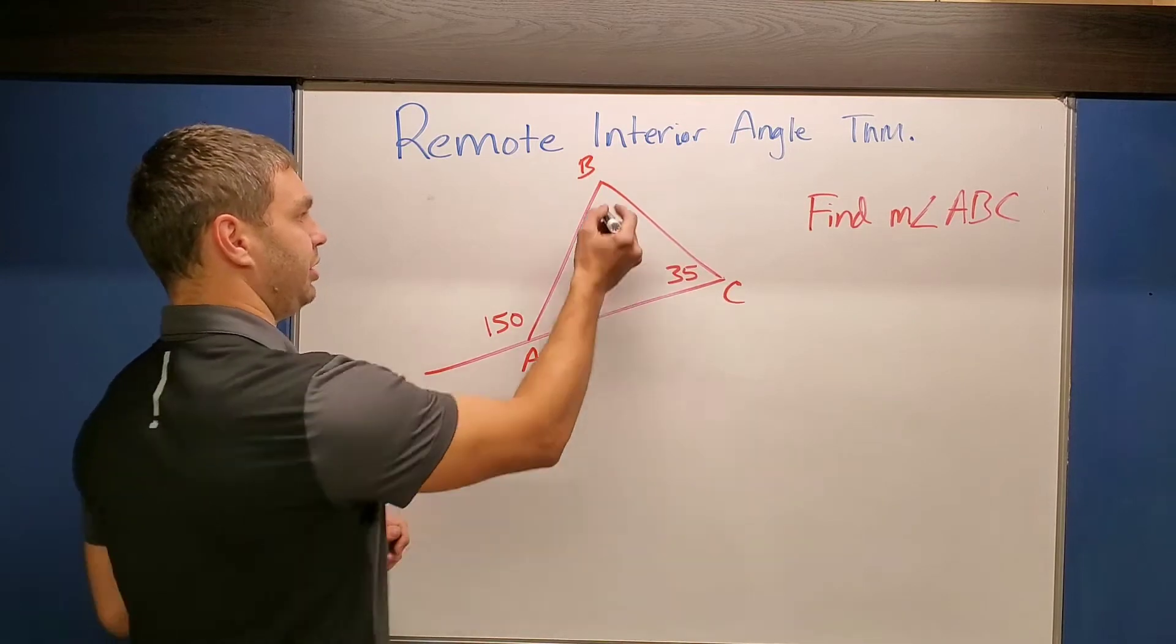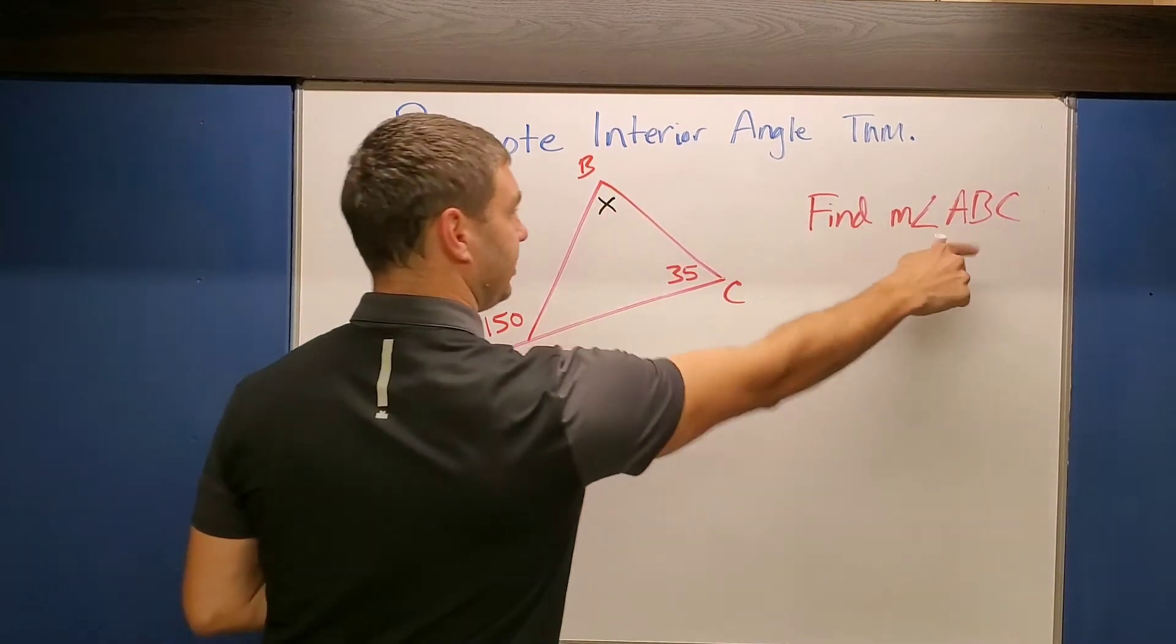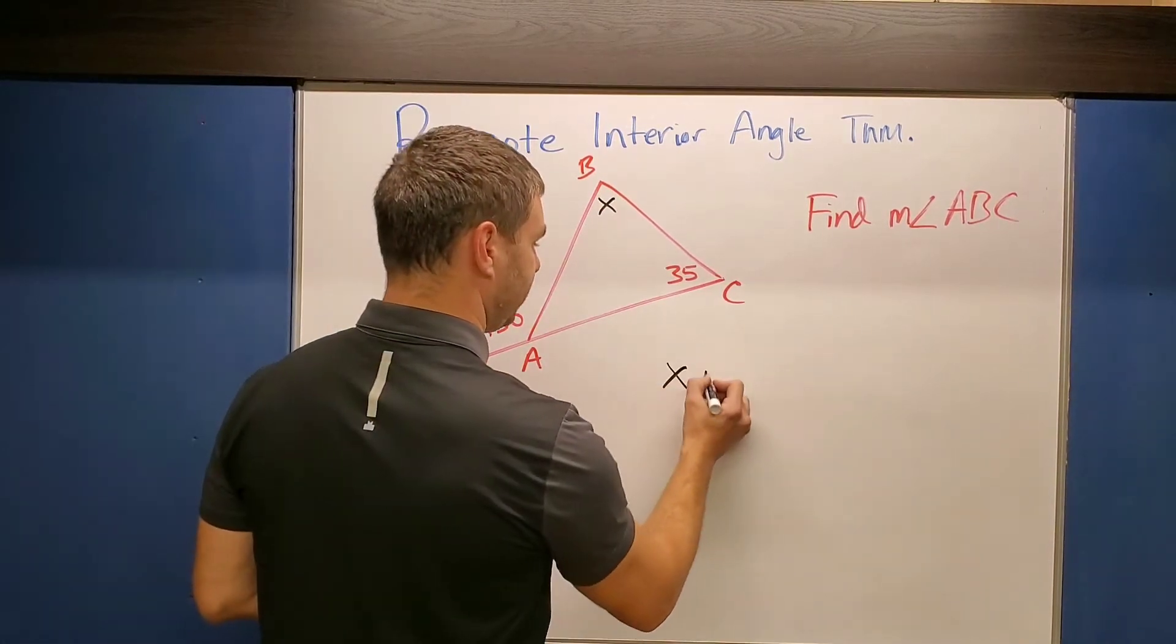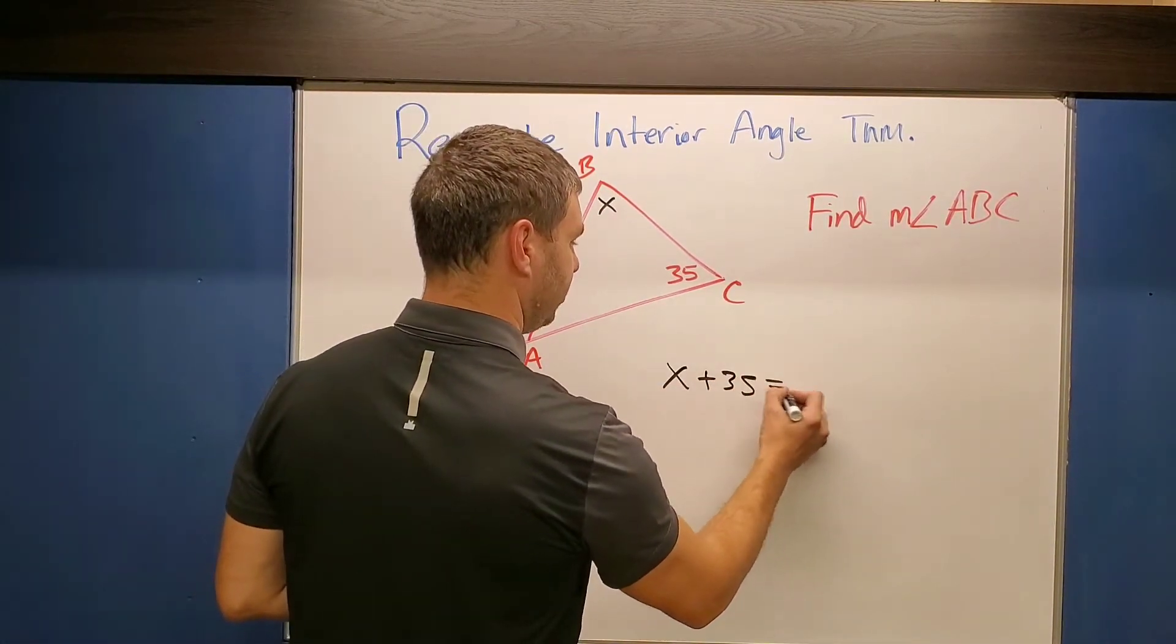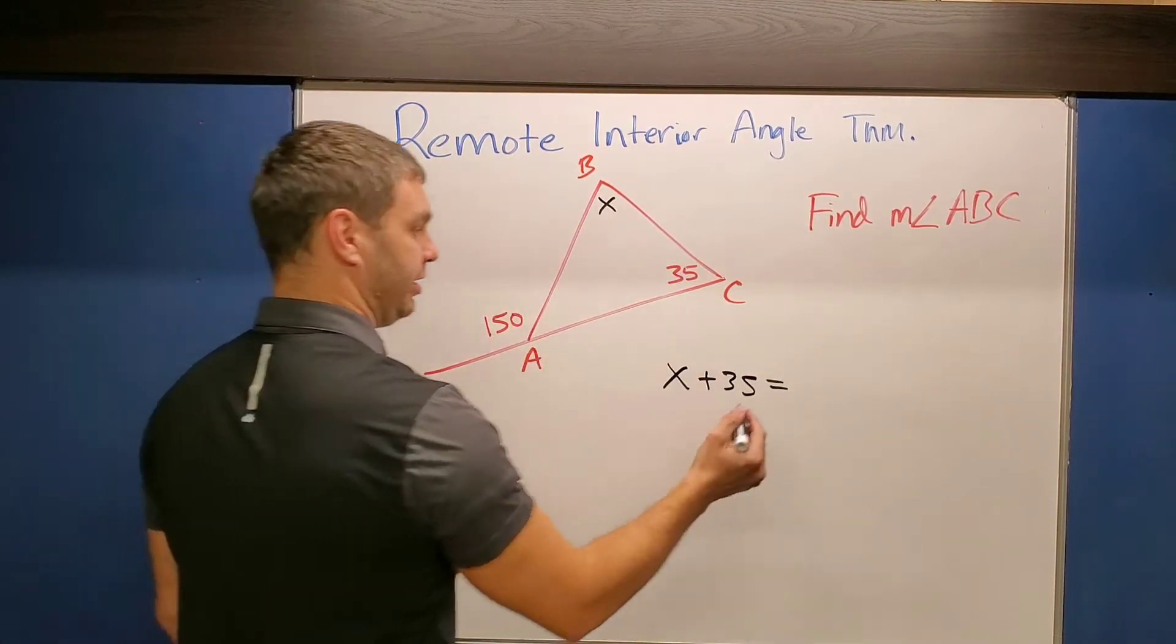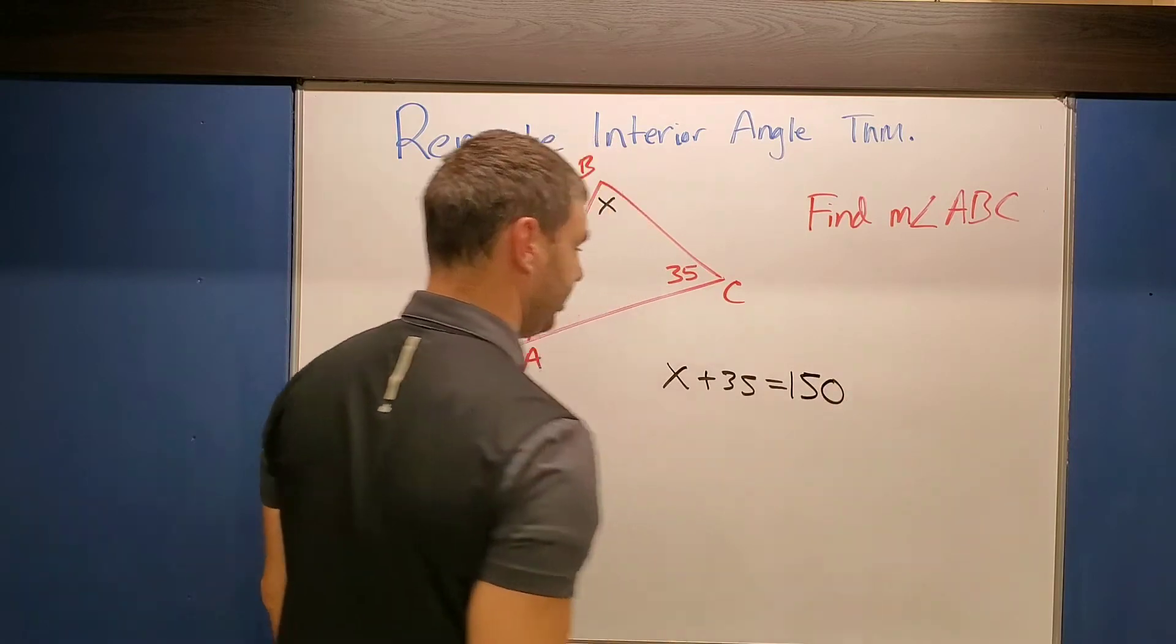All right, so what do I mean by that? Well, if I call this X to ask me to find the measure of angle ABC, right? So if I call it X, that's what I'm trying to find. I can take X plus 35, the two that are in the middle, and set it equal to their remote exterior angle, the angle on the exterior that's farthest away. In this case, 150.